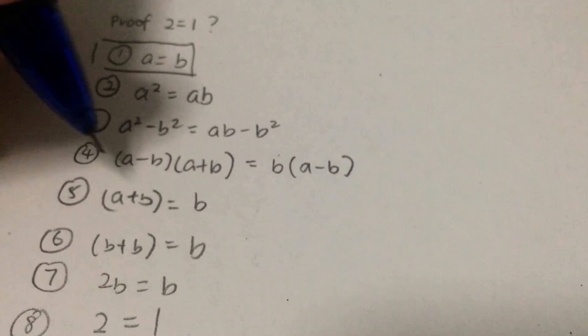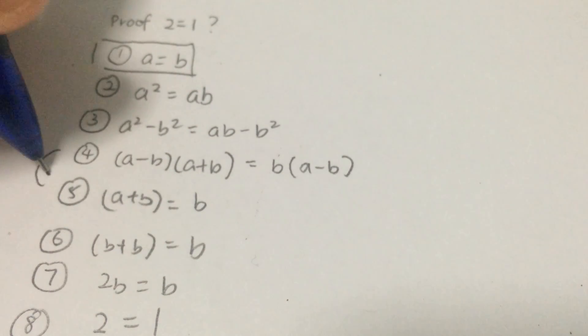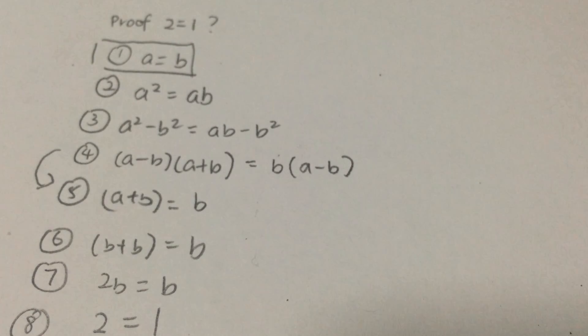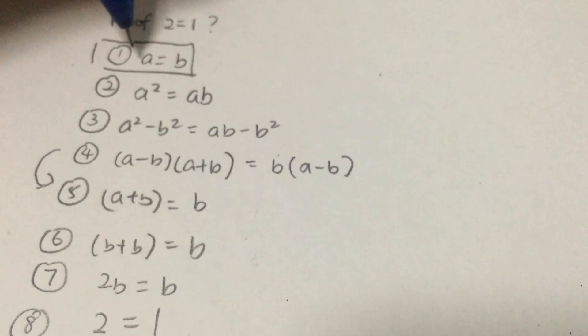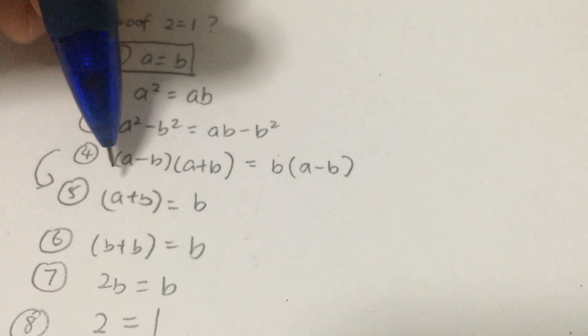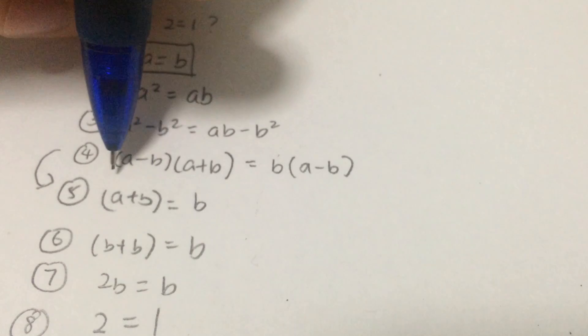And if we were to take a look from step number 4 to step number 5, what we did is actually to divide both sides by a minus b. So what happens? We know that a is equals to b. And when we divide both sides by a minus b...